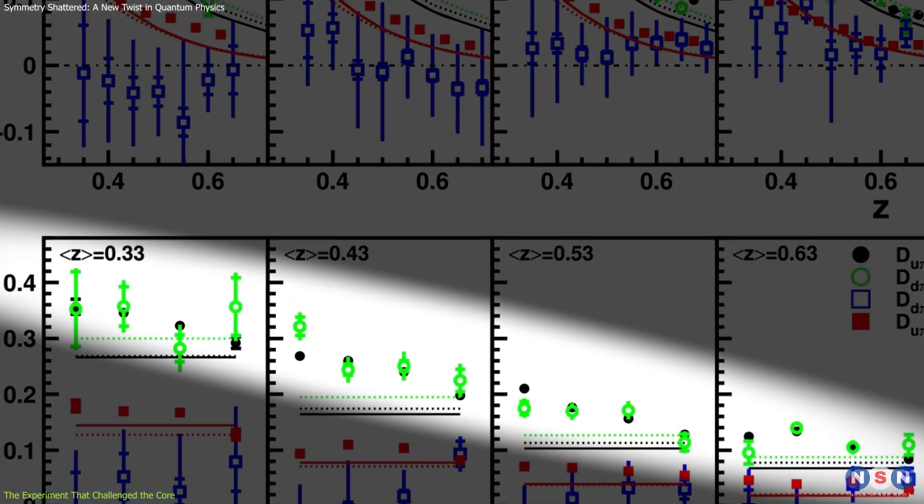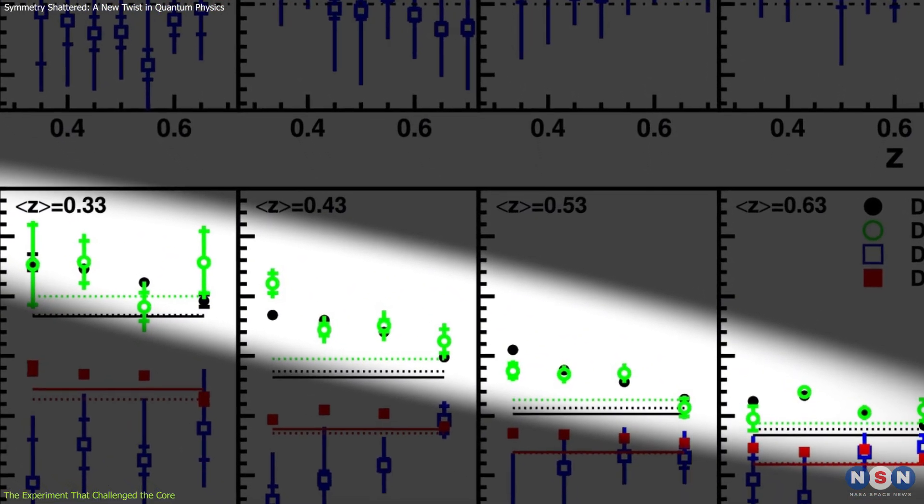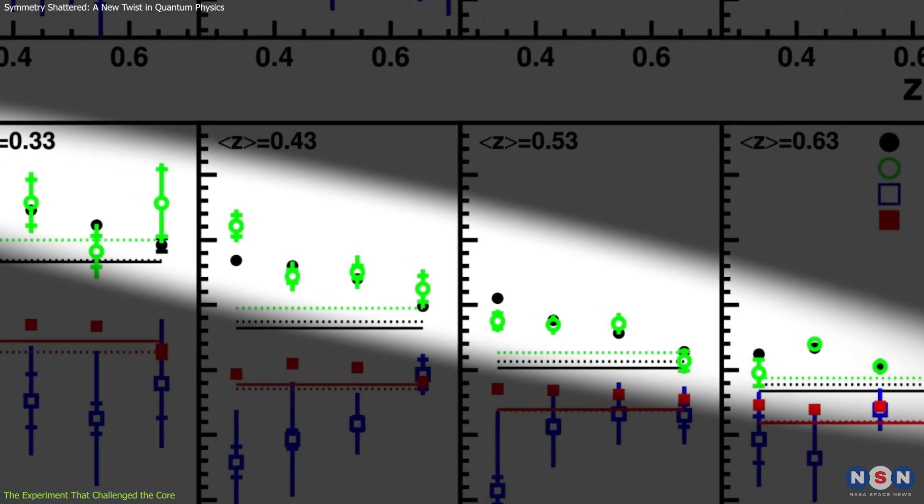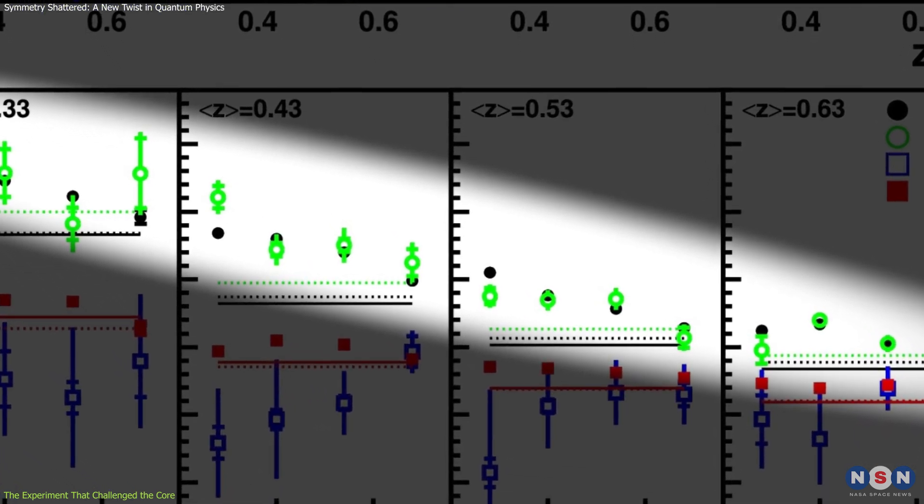However, at lower energies, this symmetry broke down, especially for unfavored fragmentation processes where the quark flavor doesn't match the valence quark in the resulting pion.